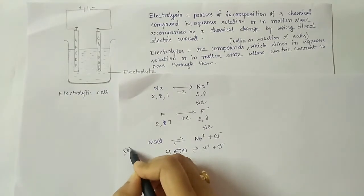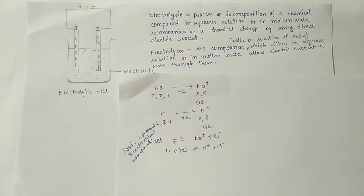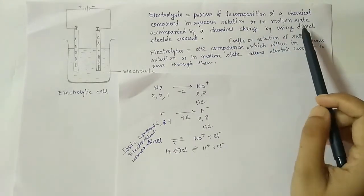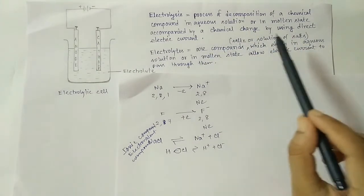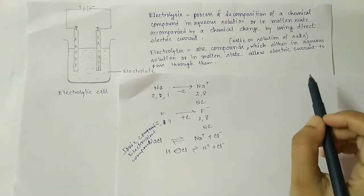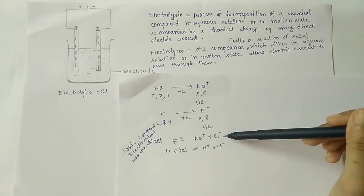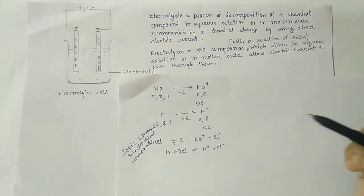So electrovalent compounds - also called ionic compounds - play the role in electrolysis. Electrolysis is the process of decomposition of a chemical compound in aqueous solution or in molten state, accompanied by a chemical change, by using direct electric current. NaCl conducts electricity when in aqueous solution because the sodium and Cl- atoms get separated due to the polar nature of the water molecule.